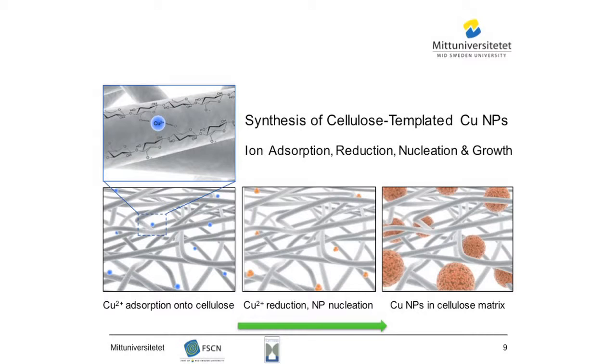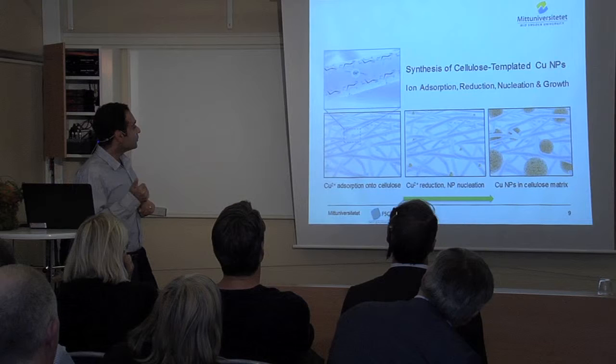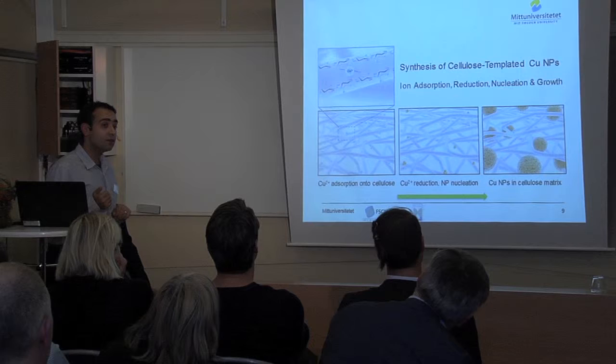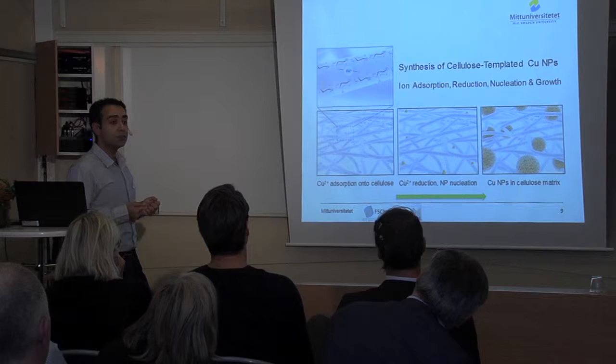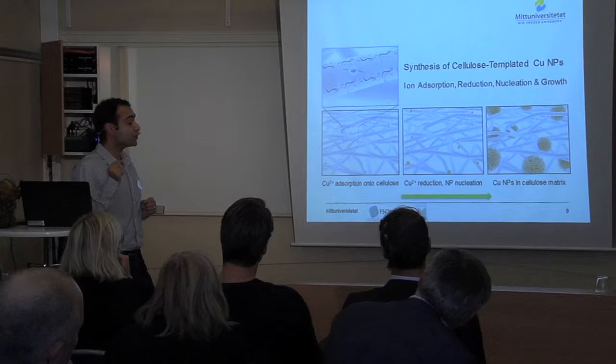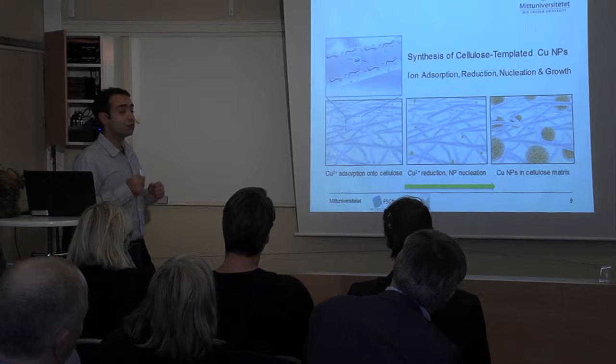To explain how this approach results in well-distributed copper nanoparticles inside the cellulose matrix, we propose the following mechanism. Under alkaline conditions, hydroxyl groups in regenerated cellulose become dissociated. Copper ions can be absorbed by electrostatic complexation with dissociated hydroxyl groups, creating well-distributed nucleation sites for the further reduction step. In the next step, by adding a proper reducing agent, the absorbed copper ions are reduced, copper crystallites are formed, and finally well-distributed copper nanoparticles are formed within the cellulose matrix.